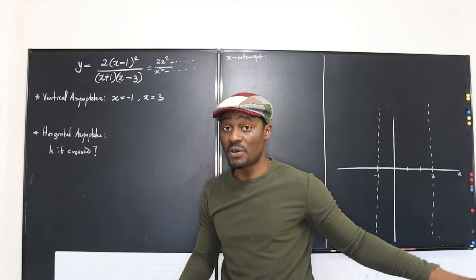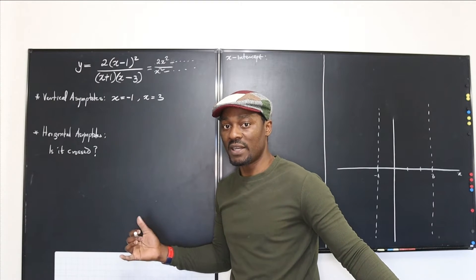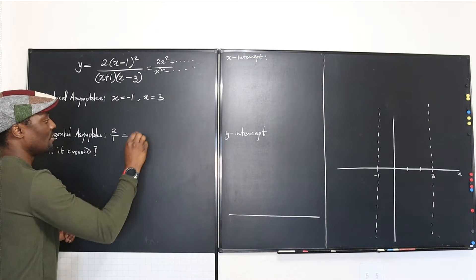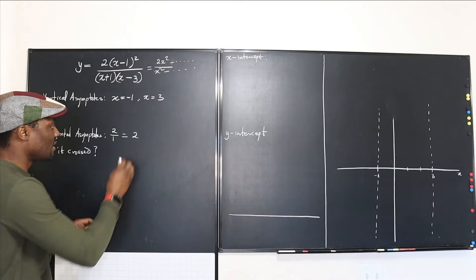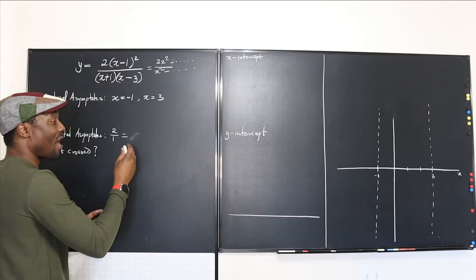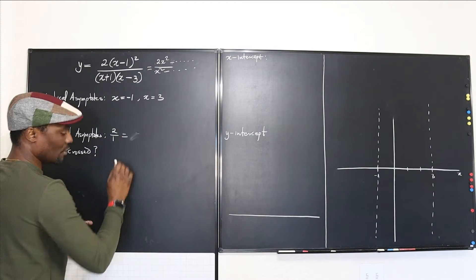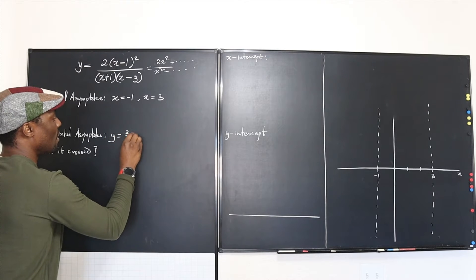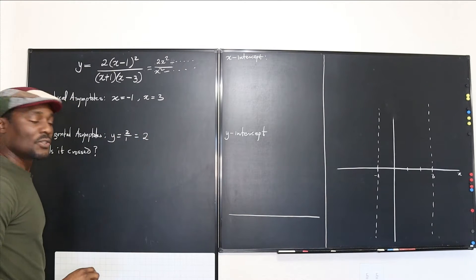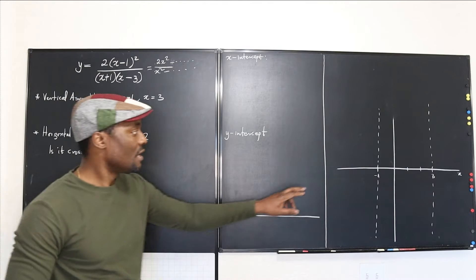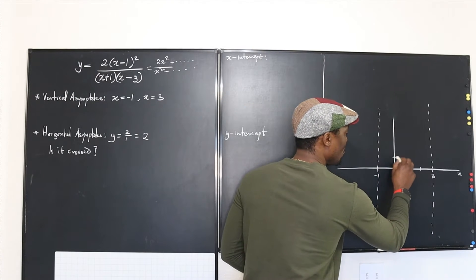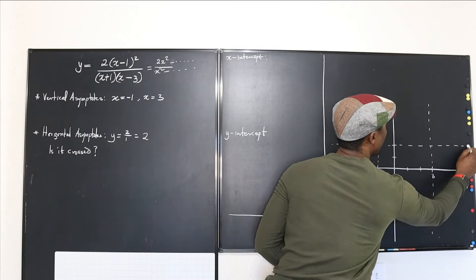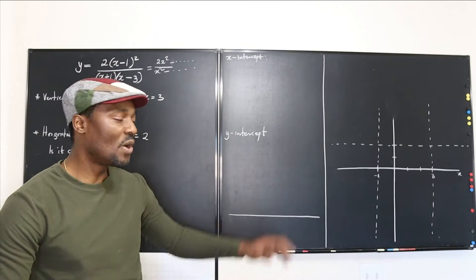If one degree is different from the other there are other rules, but right now the horizontal asymptote is going to be 2 over 1, which equals 2. So the graph must avoid the line y equals 2. On the graph, that means this horizontal line at y equals 2 is an asymptote that the curve will try to avoid.